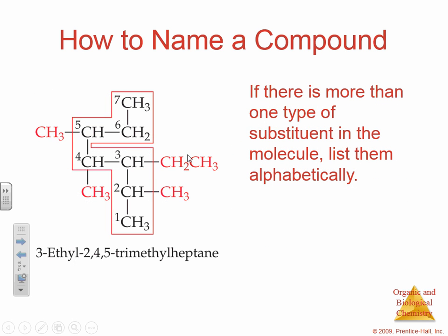Just a quick review on how to name a compound. If we have more than one type of substituent in the molecule, we're going to list them alphabetically. For example here, we have three methyl groups and one ethyl group. So we list them alphabetically: 3-ethyl-2,4,5-trimethylheptane.